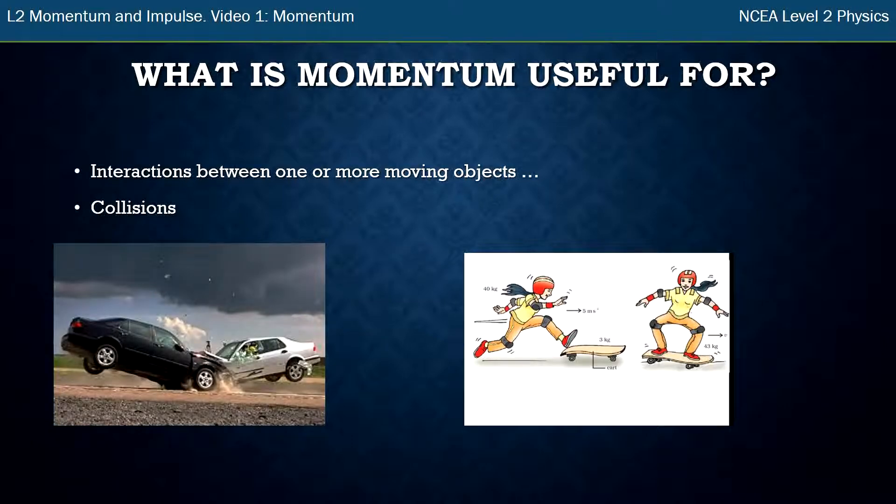You can also have a collision between one object that's moving and one object that isn't moving. So here we have a girl running and jumping onto her skateboard. The skateboard was stationary and she was moving to start with, and they both moved off together.